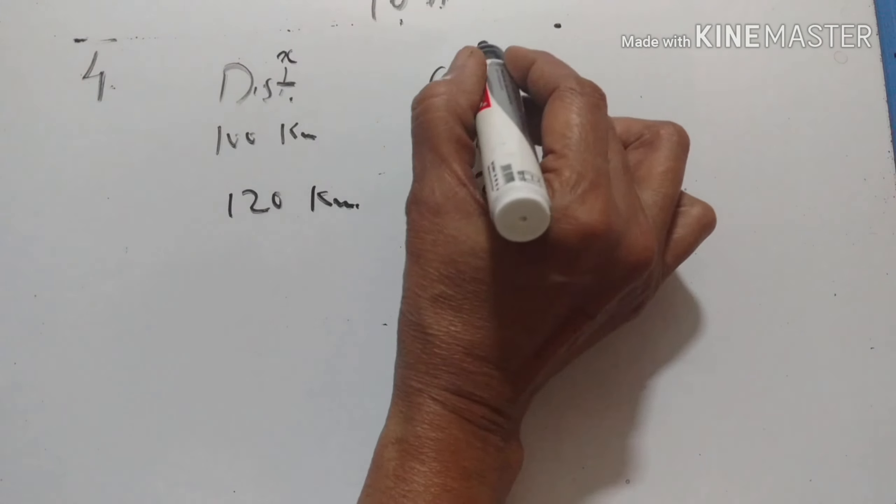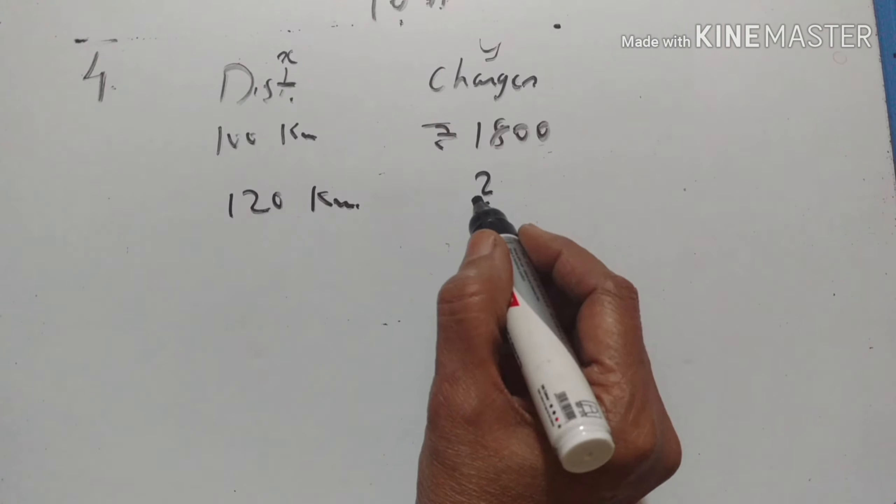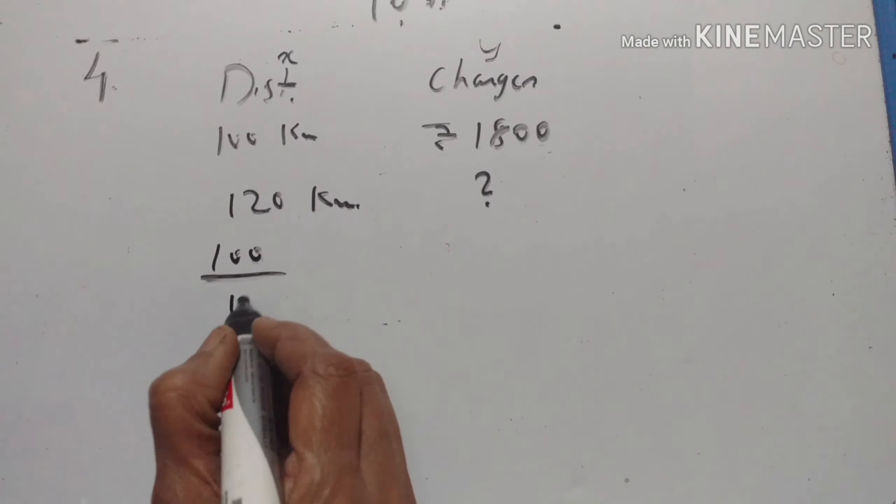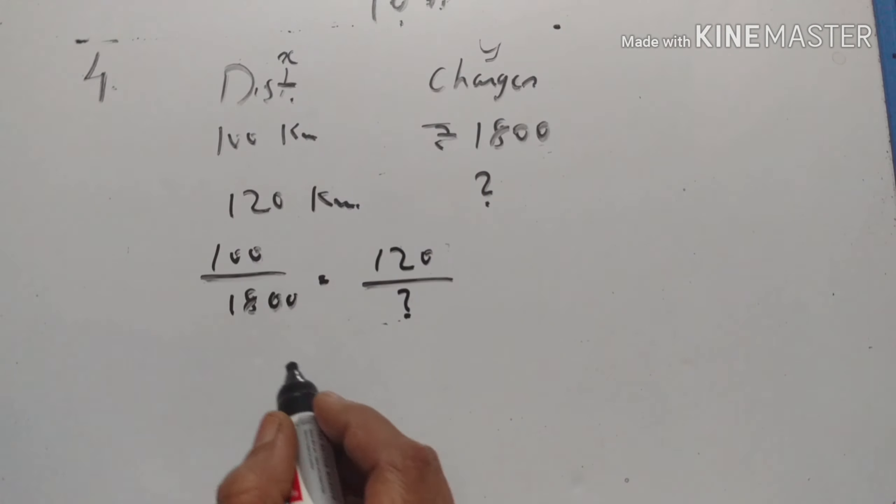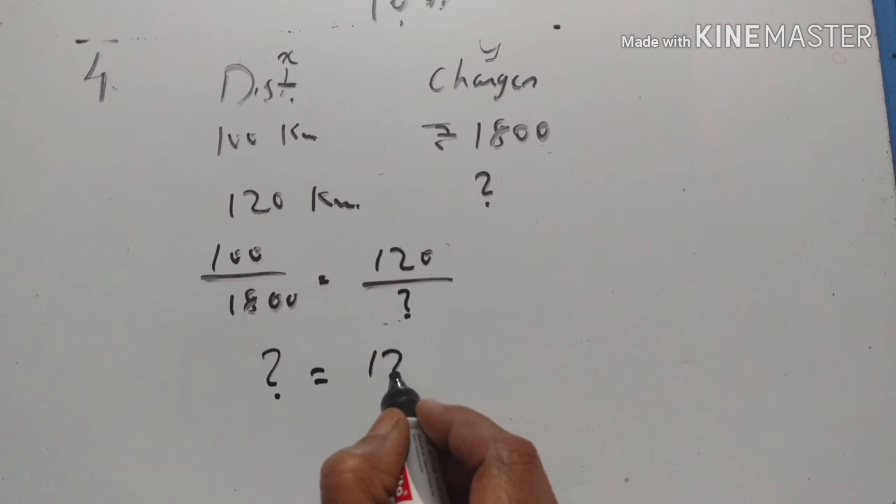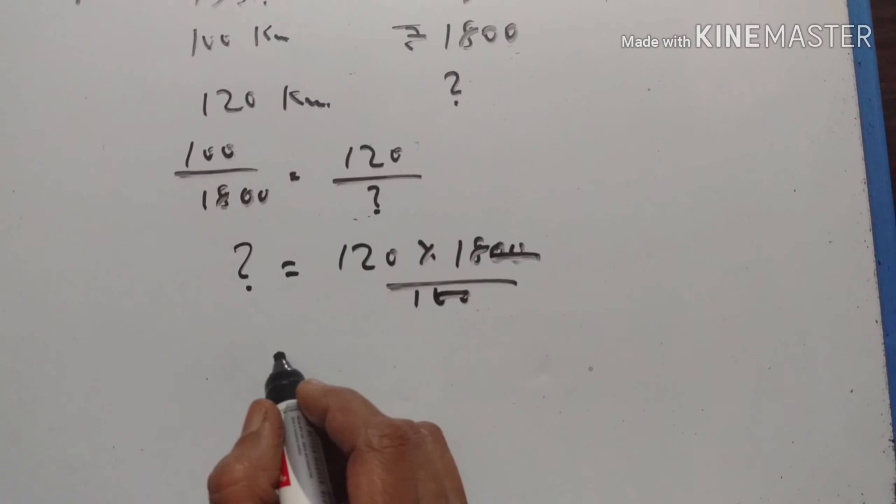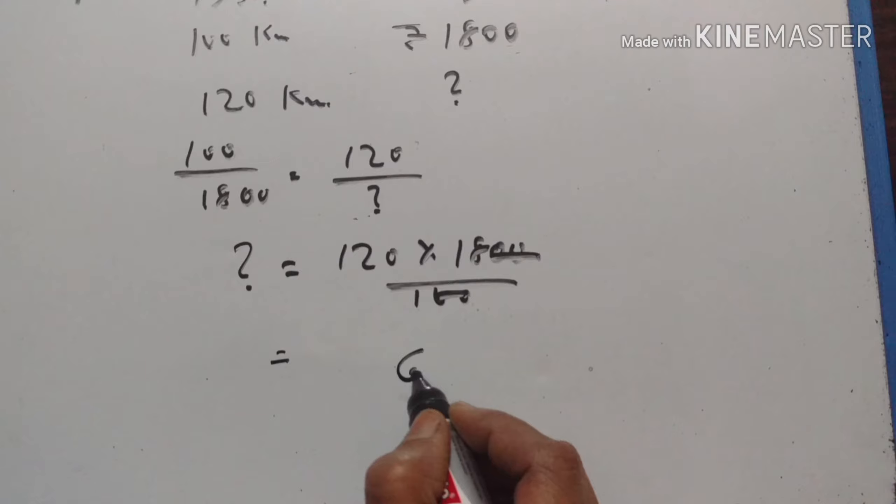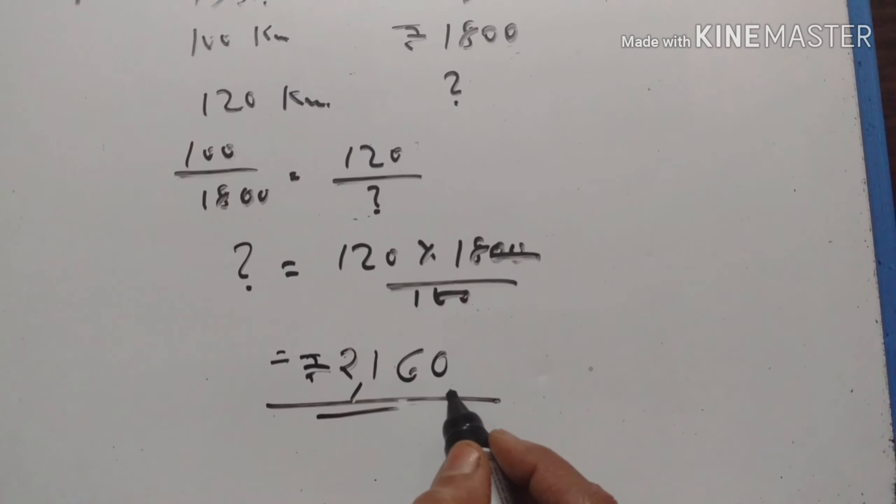Suppose this is X and this is Y. X1 upon Y1 is equal to X2 upon Y2. 100 upon 1800 is equal to 120 upon question mark. So question mark is equal to 120 into 1800 upon 100. 120 into 18, 2160 rupees.